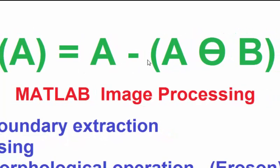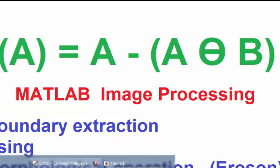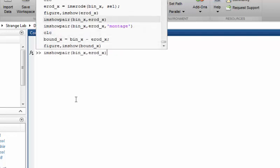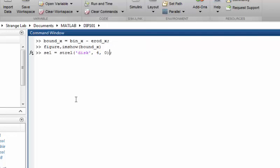Getting back to the formula: A is our binary image, and it is subtracted by the eroded image — which is the original binary image eroded by the structuring element. In our case, the structuring element is a disk shape.